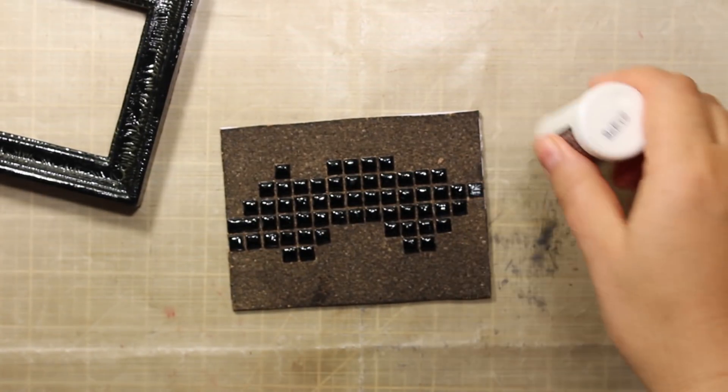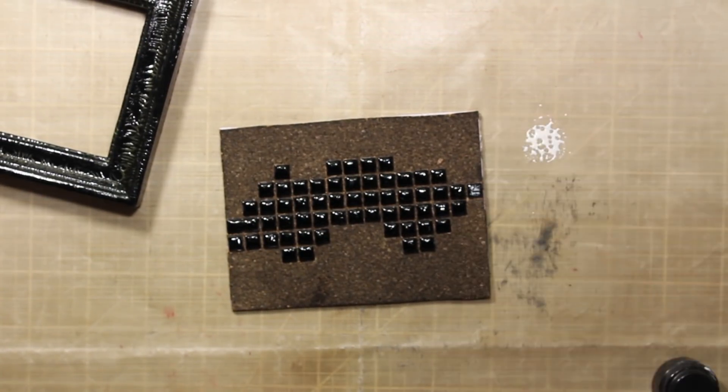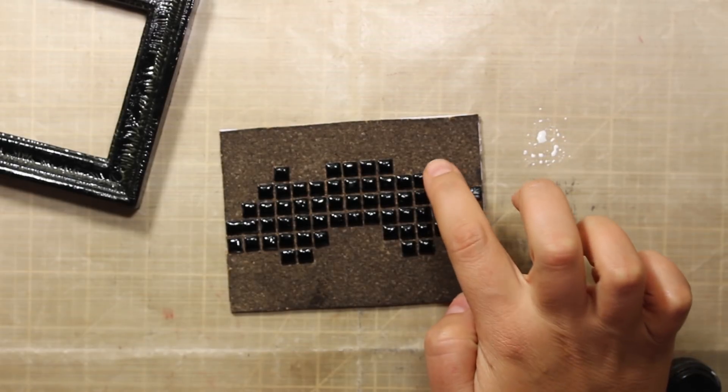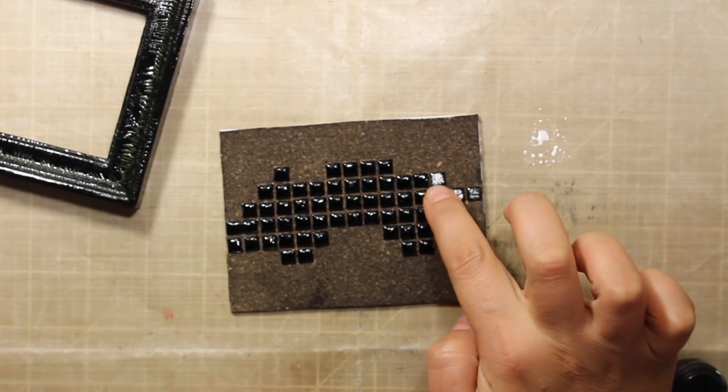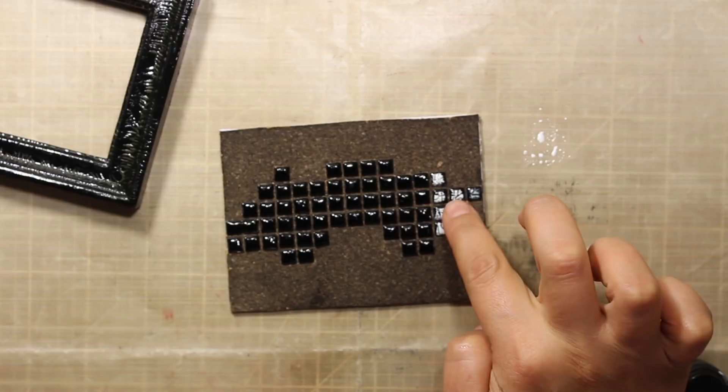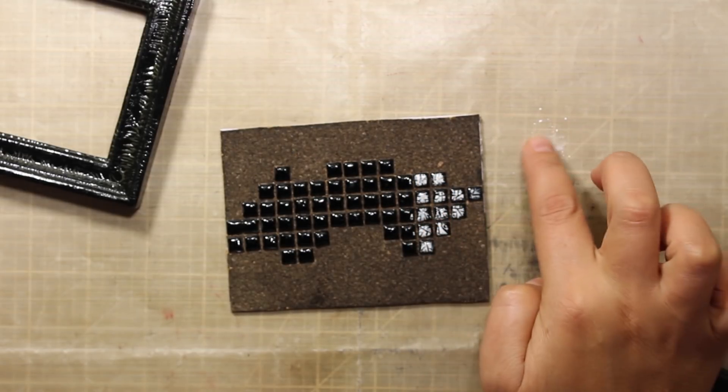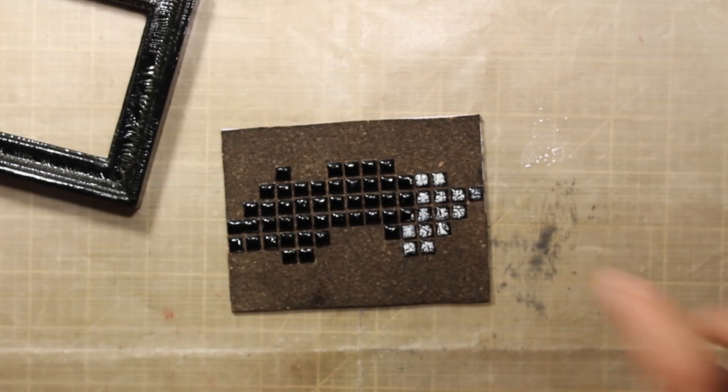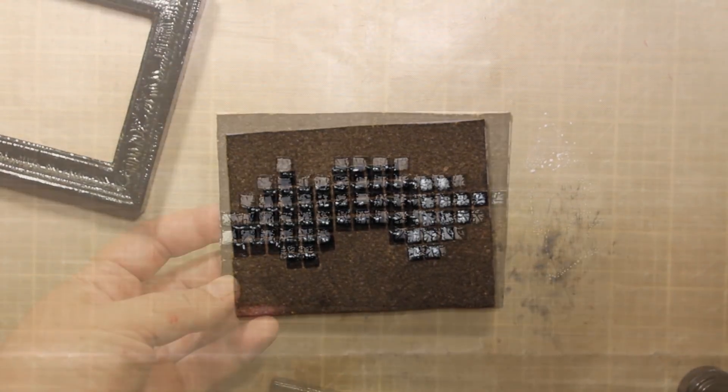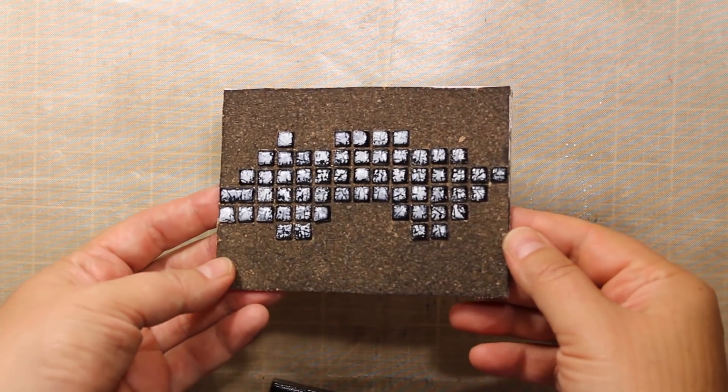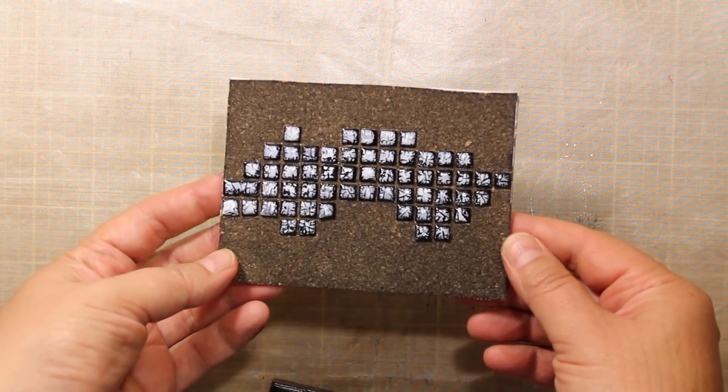Then I'm also going to use picket fence distress stain which is white. I'm squeezing out some of it onto the craft mat and then I'm applying just a tiny dot of it onto each of the tiles with the finger. And this way you can really see all those nice cracks that are created by Crackle accents.